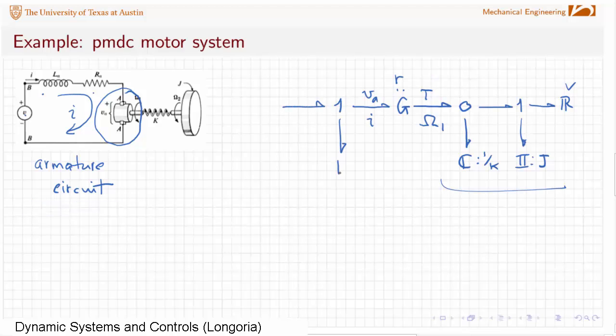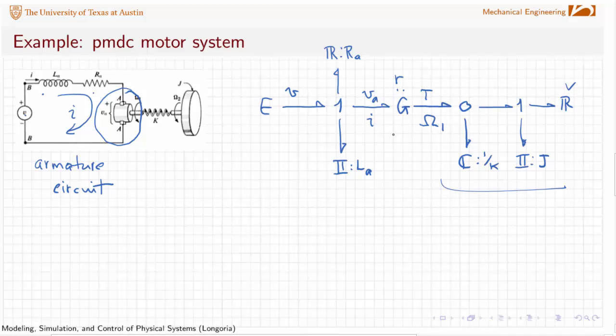So I'm going to drop the I here for the inductance, A for the armature inductance. I've got the R for the armature resistance. And all of this is being powered by a voltage here that's supplied into that armature circuit.